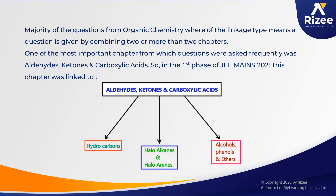In the February session, majority of the questions from Organic Chemistry were of the linkage type. Linkage type means the question is given by combining two or more than two chapters. One of the most important chapters from which questions were asked frequently was Aldehydes, Ketones and Carboxylic Acid. The chapters linked to it include Hydrocarbons, Haloalkanes and Haloarenes, and Alcohols, Phenols and Ethers.